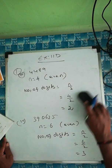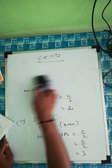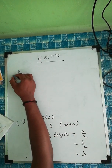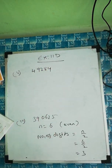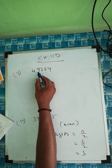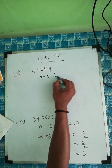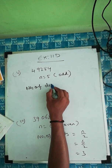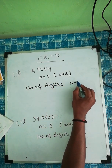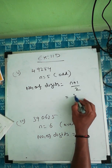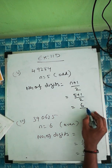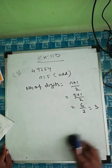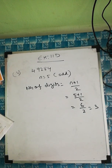Now one more question, then we'll go to question number two. Question number five: 49284. One, two, three, four, five digits. So n equals five, which is odd. For odd numbers, the formula is n plus one by two: five plus one by two equals six by two equals three. So the number of digits is three. Now we'll move to question number two.